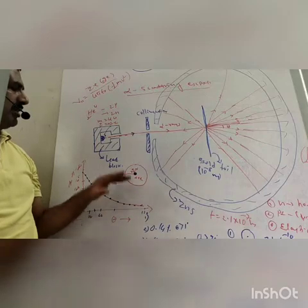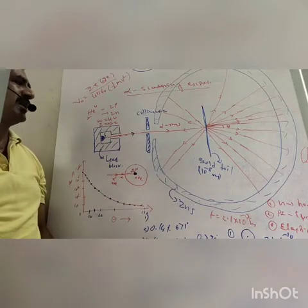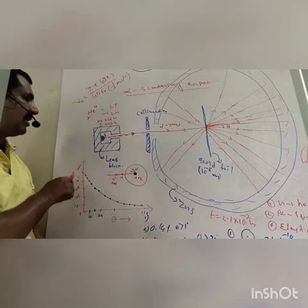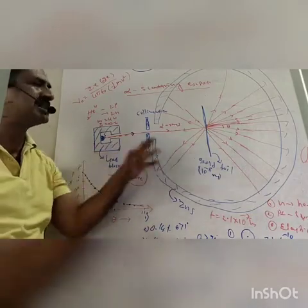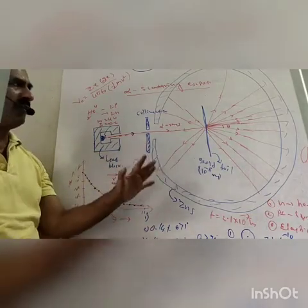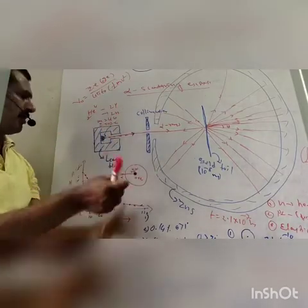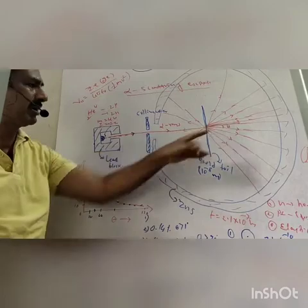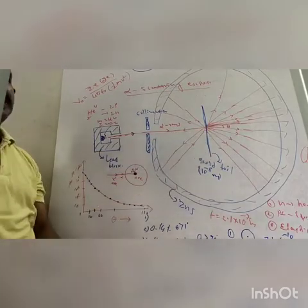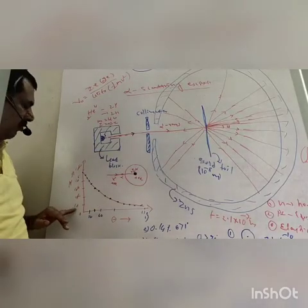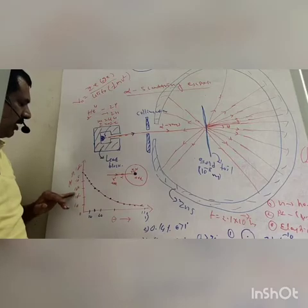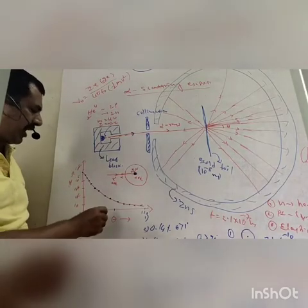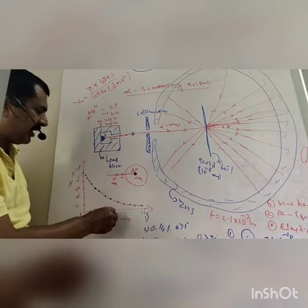From the experimental observations, graphically: along the y-axis, N is the number of alpha particles scattered by the gold foil, and the angle of scattering theta is taken along the x-axis. N ranges from 0, 10 to the power 2, 10 to the power 4, 10 to the power 6, 10 to the power 8. The angle of scattering goes 10, 20, 30, 40, 90, 180 degrees.